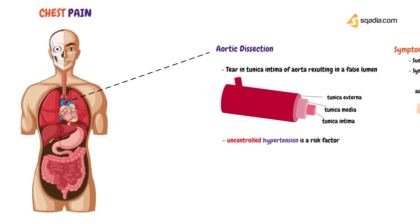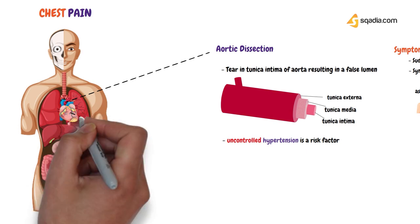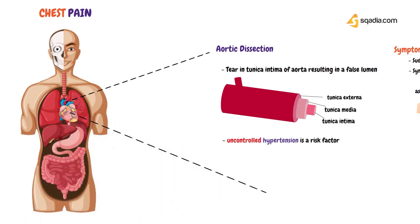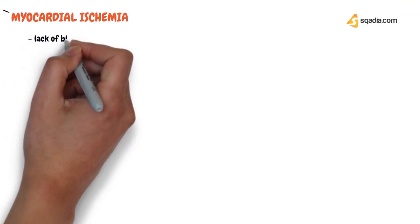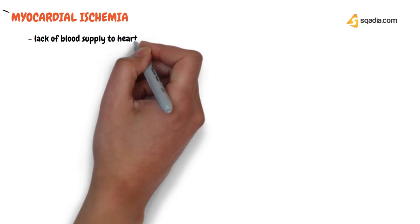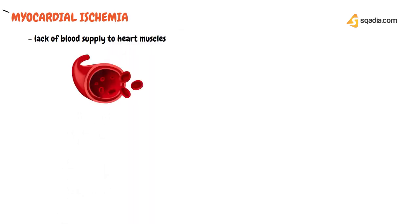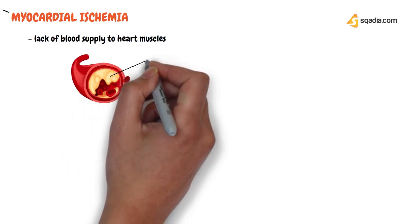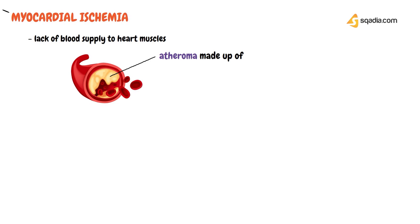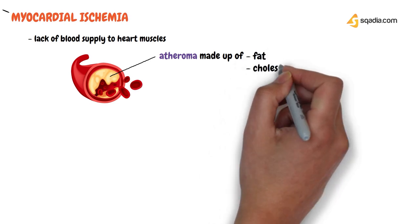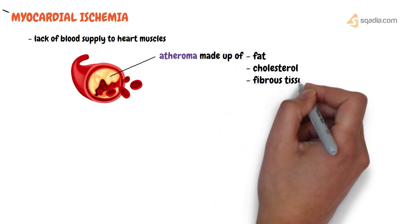Next on our list is the most common cardiac cause of chest pain, which is myocardial ischemia. Myocardial ischemia refers to lack of blood supply to heart muscles and occurs due to a blockage of coronary arteries supplying blood to the heart muscles — a process called atherosclerosis. In atherosclerosis, an atheroma builds up in the coronary artery over many years, consisting of fat, cholesterol, and fibrous tissue.